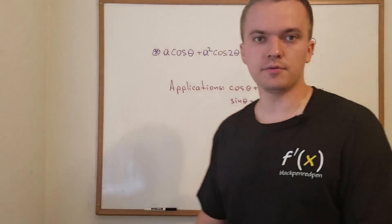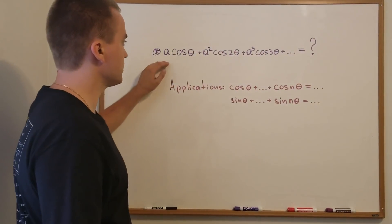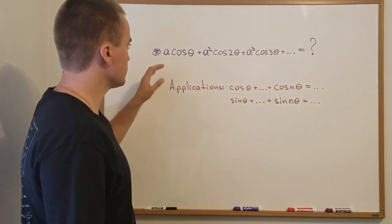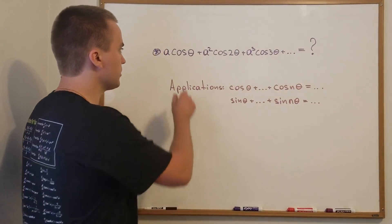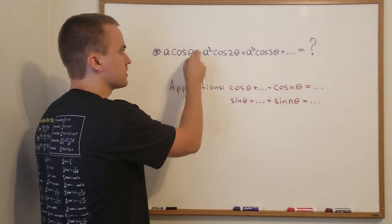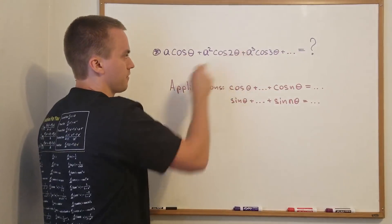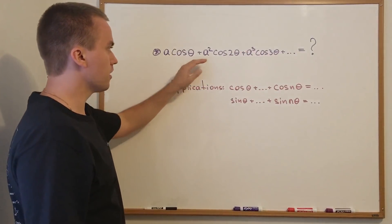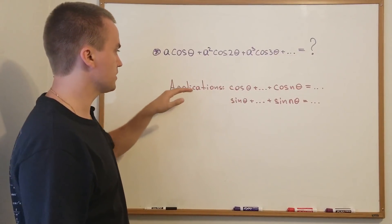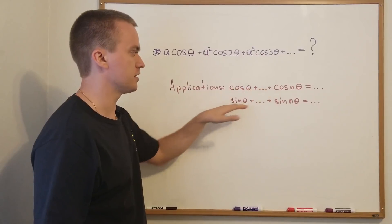Hello guys, in this video I want to discuss the following problem. I have this series and I want to find the sum of the series. This series is a little bit familiar to a geometric series, but instead of just a plus a squared plus a cubed, we have an additional cosine factor. By using the method I'm going to show you, you can apply it to find the finite sum of cosines and sines.